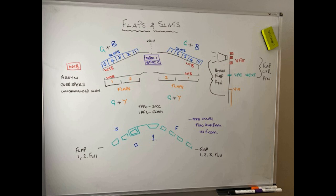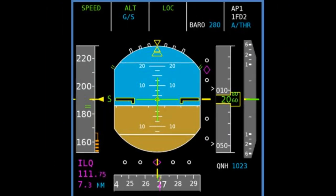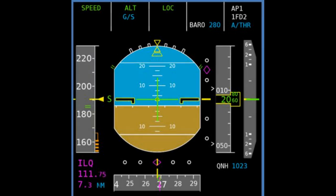We're taking a look at the flaps/slats jammed checklist, but initially we're going to go over a systems overview, putting some context to the flaps and the slats and the various systems within it.